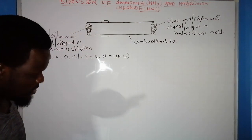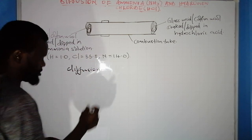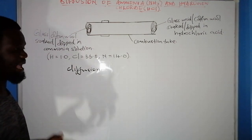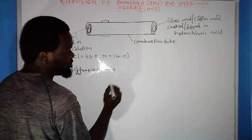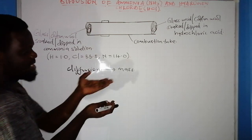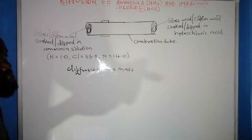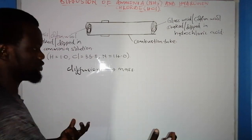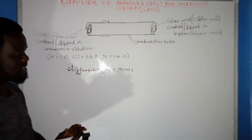For gases to diffuse — diffusion refers to the movement of molecules or particles from a region of high concentration to a region of low concentration. Diffusion depends on the mass of a substance. The heavier the molecule, the slower the rate of diffusion; the lighter the molecule, the faster the rate of diffusion.